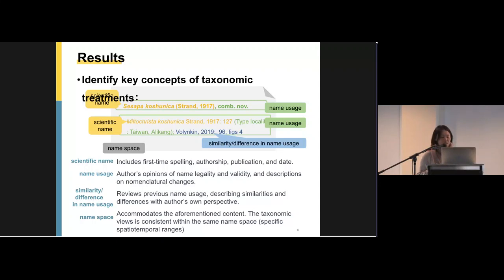Including authorship and publication. That's the scientific name part. The primitive information associated with the name. Then followed by the name usage, which express authors' opinions of name, legality, and validity, and descriptions on nomenclature changes. Then if it's not a new name, sometimes it will follow by some citations. It's a review of previous name usage. Describing similarities and differences with authors' own perspective. Like using synonym and pro parte, these intake indicators.